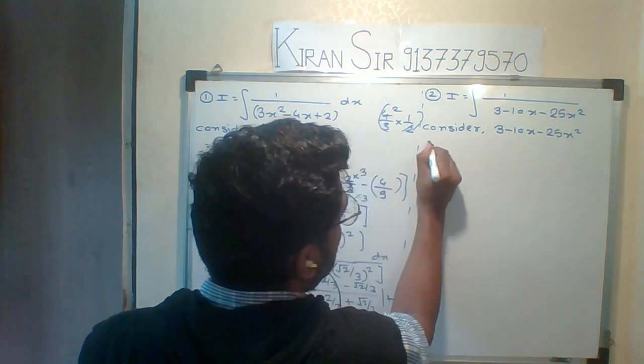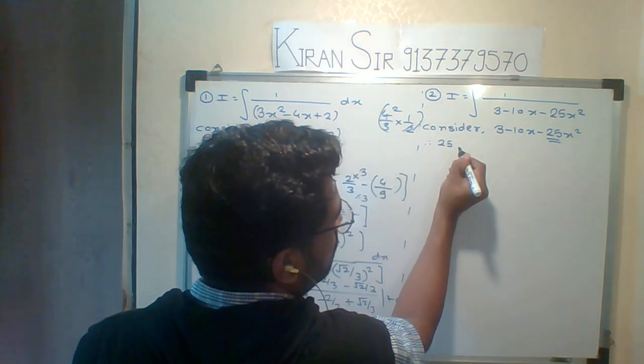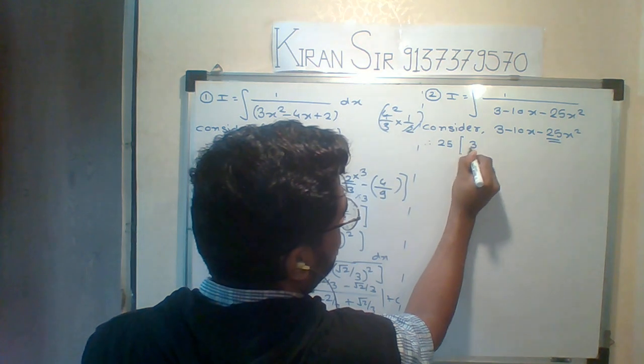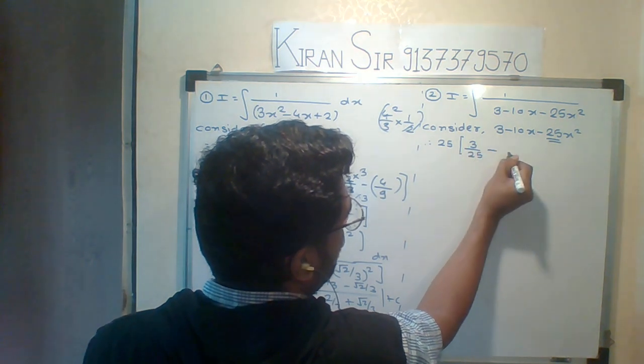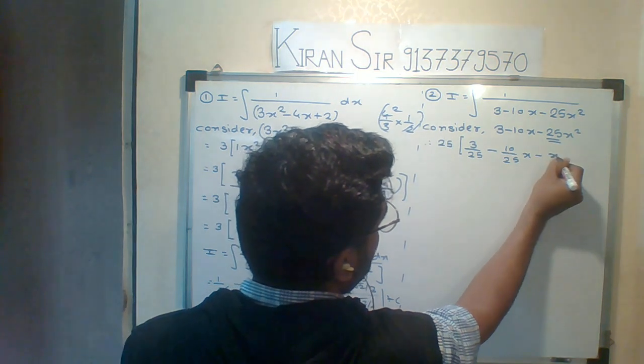Let's see. In the first step, I take 25 common. If I take 25 common, I will get 3 upon 25 minus 10 upon 25x minus, if I take 25 common, I will get x squared.